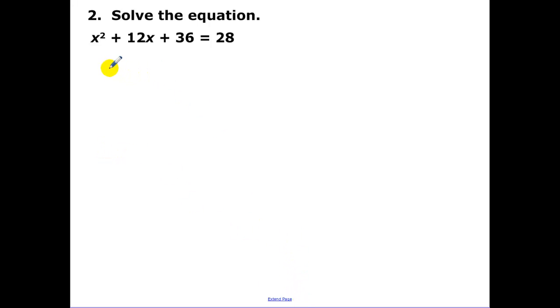Now the next one. Now this one is deceiving. Notice how on the left side that's a perfect square trinomial. So look out for those perfect square trinomials. That's going to factor to (x + 6)².